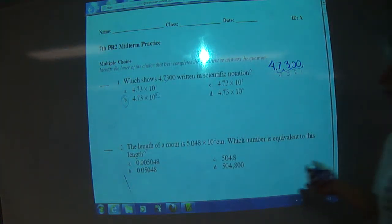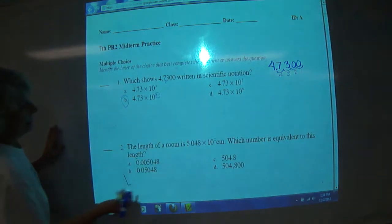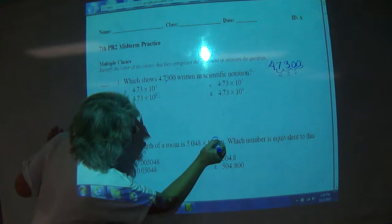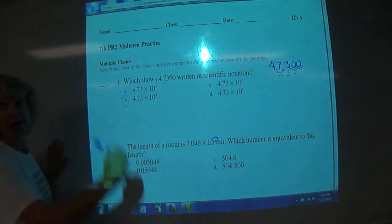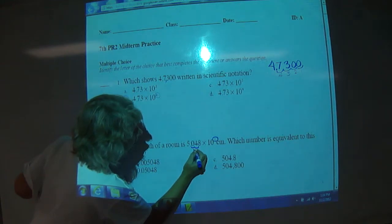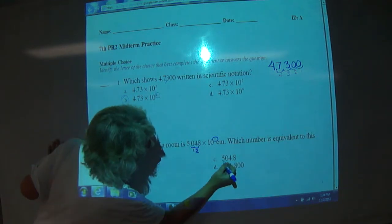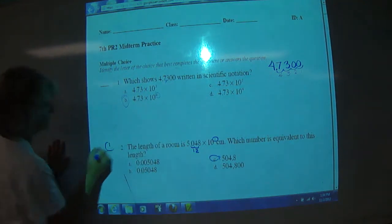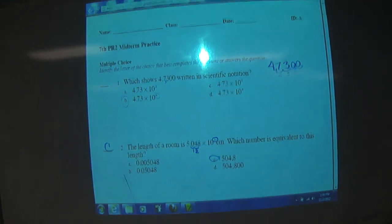With number two, what we're going to get is 5.048 times 10 to the second. So we're going to move it to the right, to the right twice, one, two. So we're going to get 504.8, or the answer is C. All right.